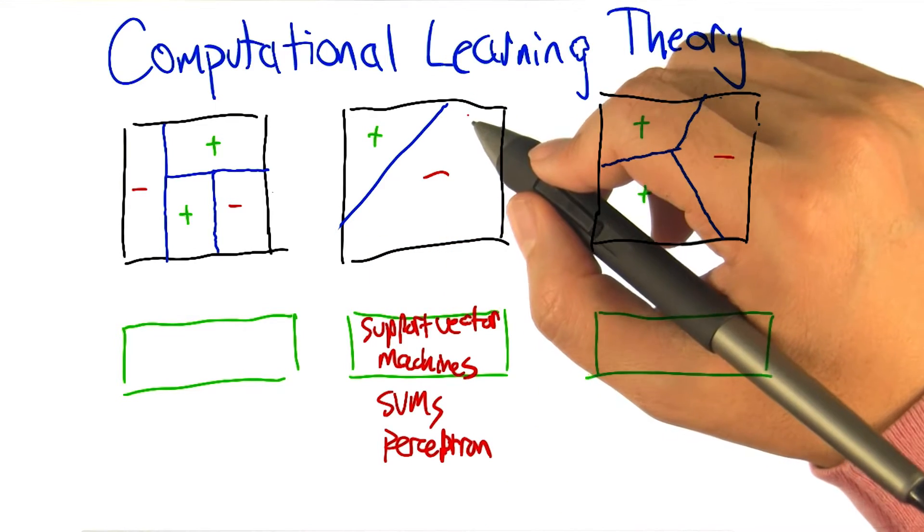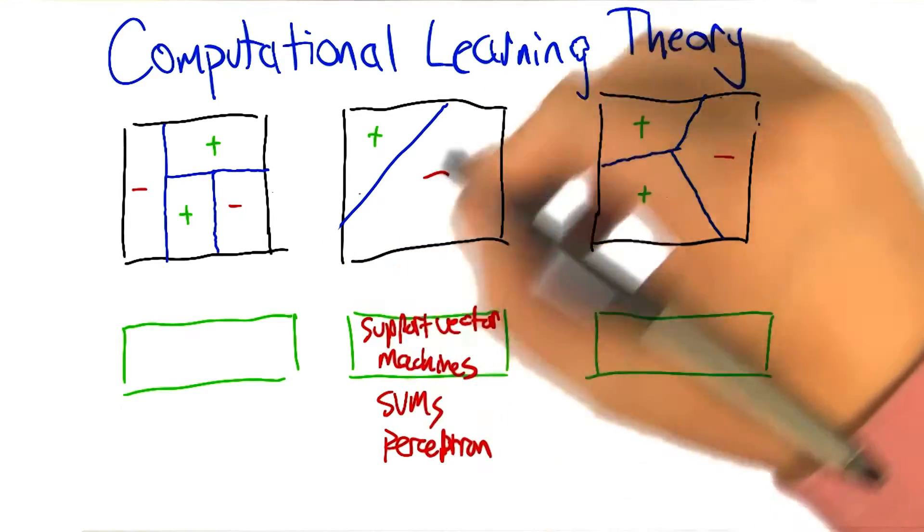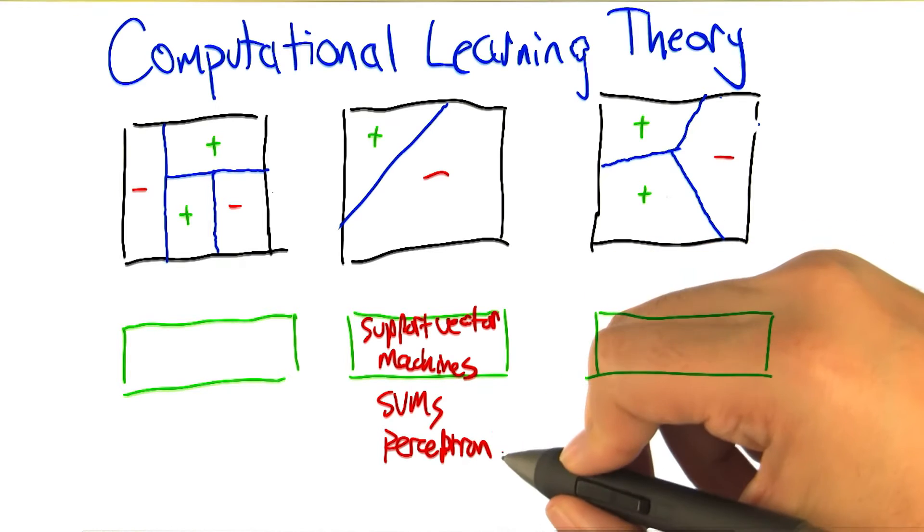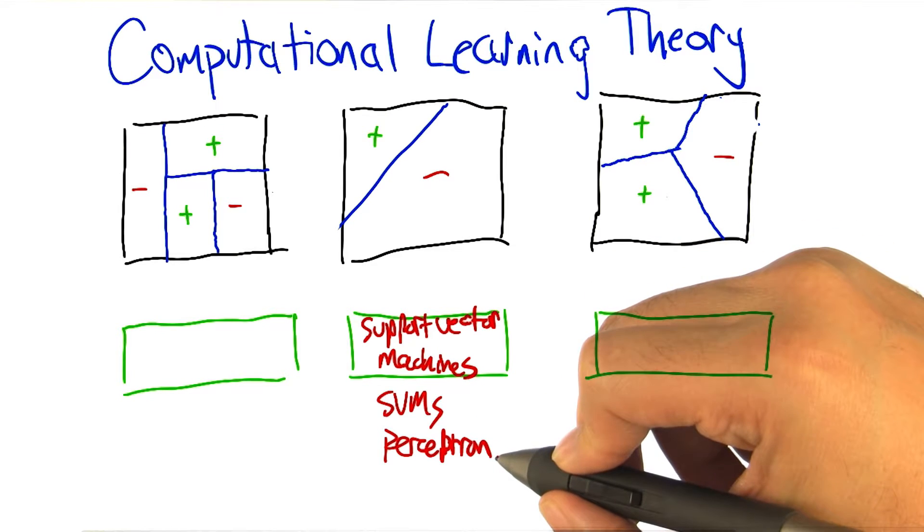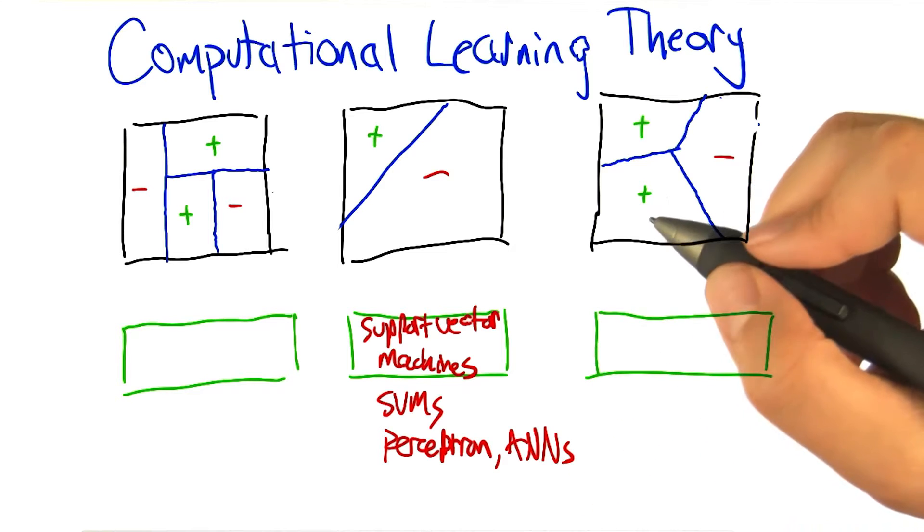And so the output, the classifier that comes out of it, is going to separate any kind of region into pluses and minuses with some line separating them out. That's also true of perceptrons and certain kinds of simple neural nets. So all of those seem like reasonable answers for the middle one.